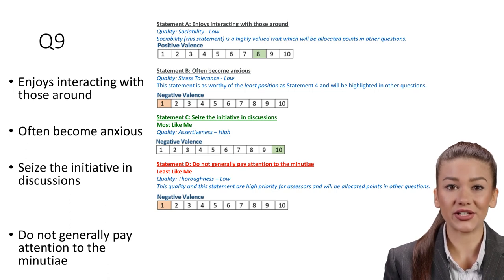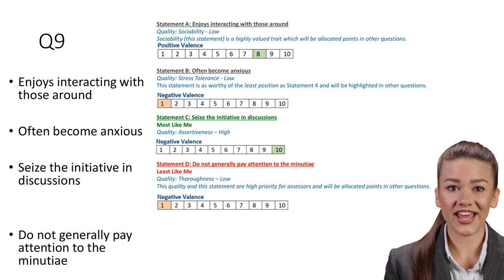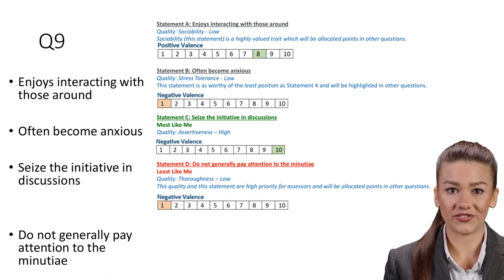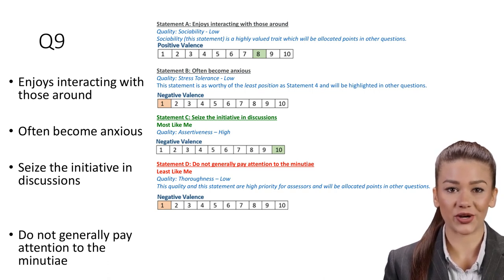Statement D: Do not generally pay attention to the minutiae. Least like me. Quality: Thoroughness low. Because attention to detail and quality of work are often closely linked, high thoroughness is a trait that is desirable for candidates to demonstrate. This quality and this statement are high priority for assessors and will be allocated points in other questions.